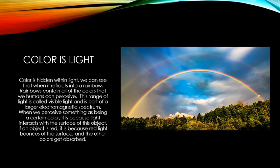Rainbows contain all the colors humans can perceive. This range is called visible light, and it's part of a larger electromagnetic spectrum. Different animals can see different ranges of that spectrum. Many mammals, like dogs, can't see as many colors as we can — they're not colorblind, they just have a narrower range.